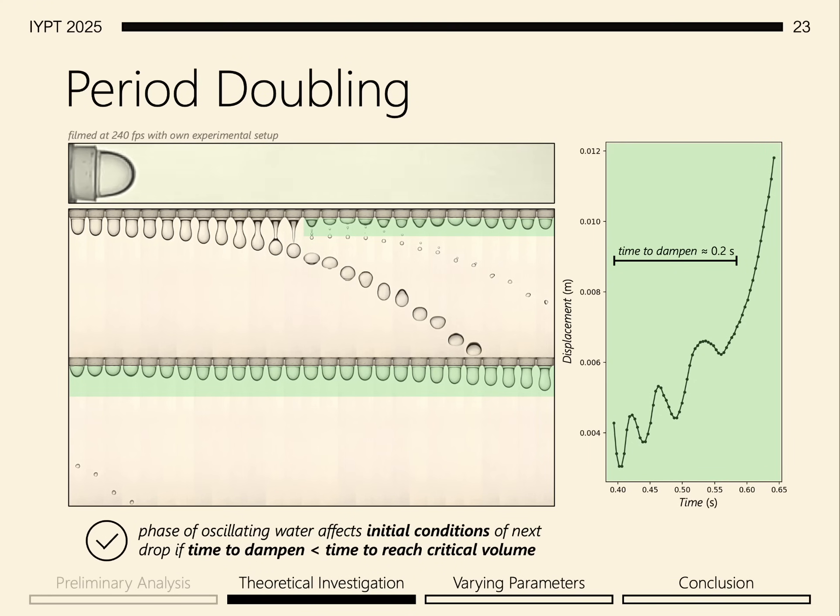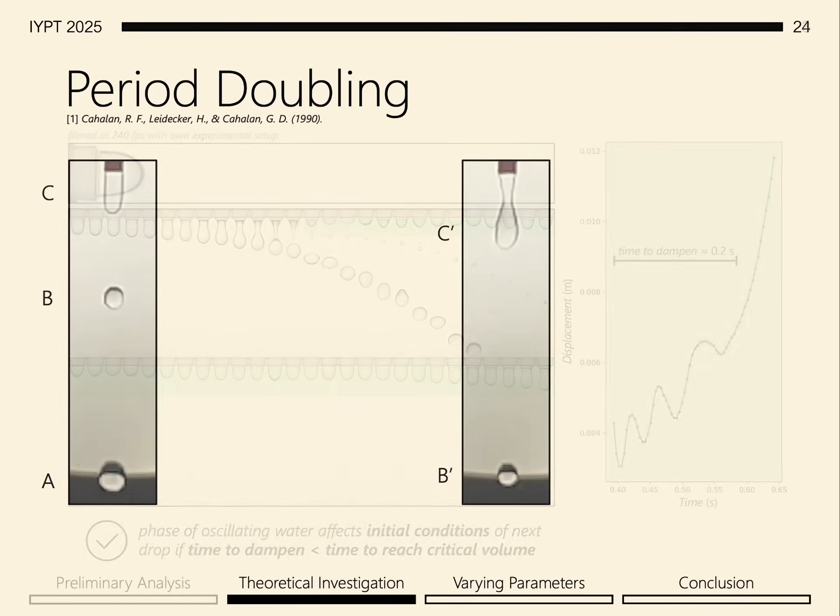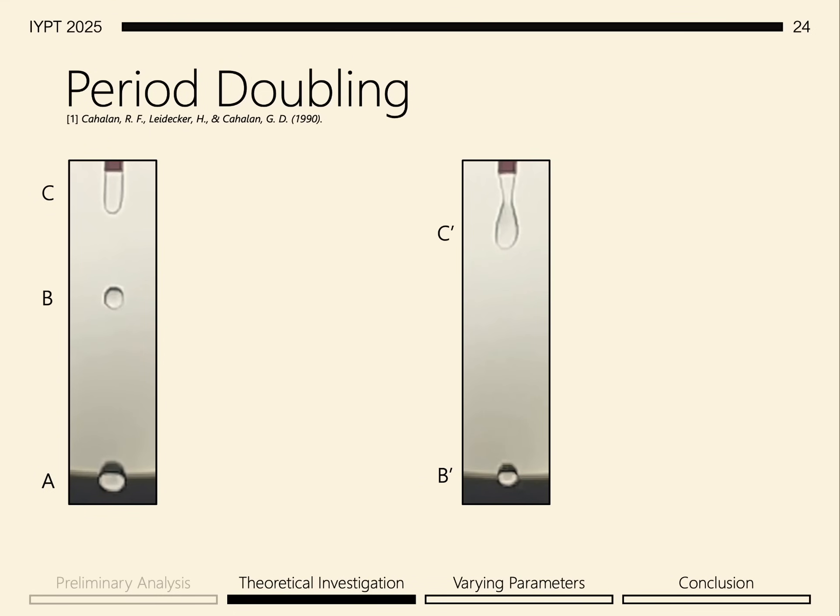However, the oscillations become significant when looking at higher flow rates. Looking at two frames from higher flow rates, notice that the time between drops for the flow rates are very different. I mean the different frames. We can explain this by looking at how the phase of the oscillation affects the drop for each.